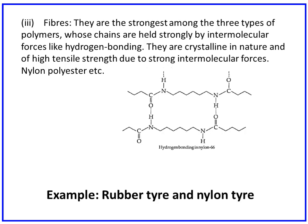The strongest among the three types of polymers is the fiber. These chains are held strongly by intermolecular forces like hydrogen bonding. They are crystalline in nature and have the highest tensile strength due to strong intermolecular forces. Nylon and polyester are examples of fibers. In the coming slides we will discuss rubber, plastic, and fiber in more detail.